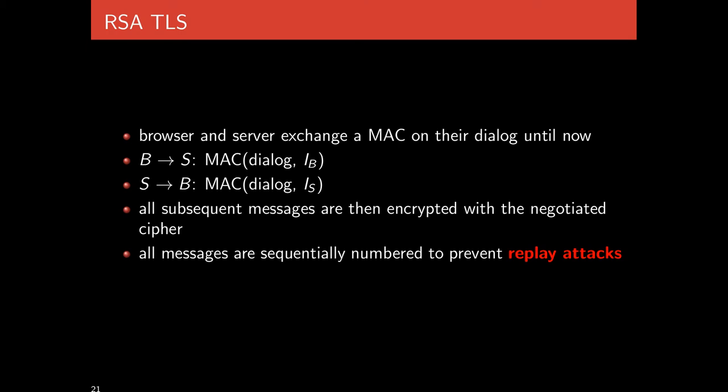After the handshake phase ends, the record phase begins. All subsequent messages are encrypted with the negotiated cipher and are sequentially numbered to prevent replay attacks. So message 5, message 6, and so on — the attacker can't take an old message and replay it later. Using two different keys for outbound and inbound data, combined with sequential numbering, prevents replay and reflection attacks.